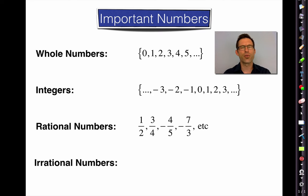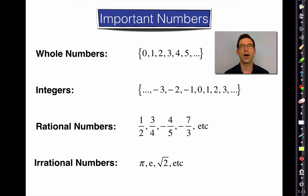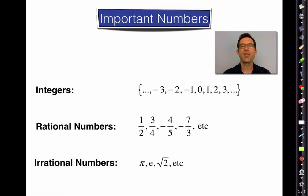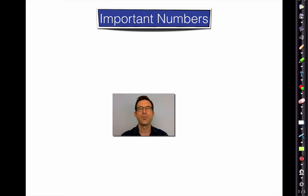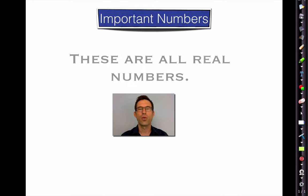After that come the rational numbers — ratios of integers, things like one-half, three-fourths, negative four-fifths. They're the numbers we simplistically call fractions. Finally, there are numbers you can't write as the ratio of two integers — those are irrational numbers. We looked at those in Common Core Algebra 1: numbers like pi, and we've seen the number e this year. Square roots of non-perfect squares, like the square root of two, are irrational. All of these are real numbers.